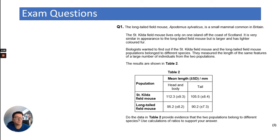So let's look at the question. Long tailed field mouse is a small mammal common in Britain. And then they talk about the St. Kilda field mouse lives only on one island off the coast of Scotland. This is very similar in appearance to the long tailed field mouse, but it's larger and it has lighter coloured fur. So they wanted to find out if the St. Kilda field mouse and the long tailed field mouse belong to different species. So they measured the length of the same features - head and body and the tail - of a large number of individuals. So that's quite a reliable set of data from the two populations.